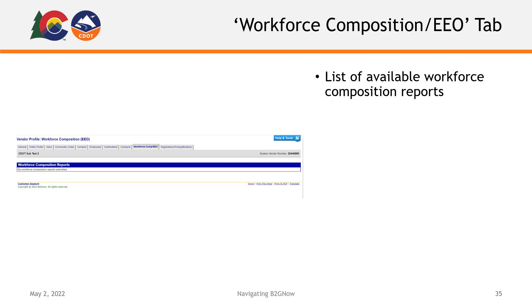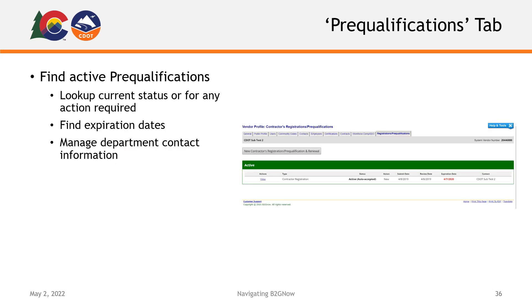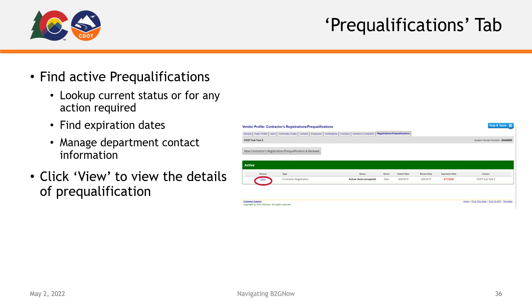On your Workforce Composition/EEO tab, you will find a list of any available Workforce Composition reports that have been submitted on behalf of your organization. Lastly, you will find your Prequalifications tab. This tab is where you can see your organization's active prequalifications. Here, you can also check for the current status or any necessary actions for your prequalifications, as well as edit the names of your department contact people. From this list, you can view any of your prequalifications by clicking the View link to the left of the appropriate entry.